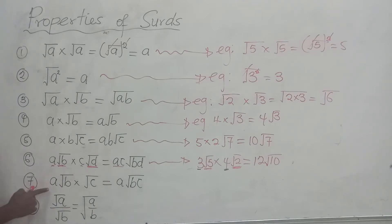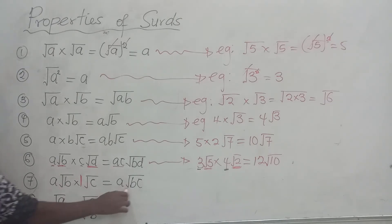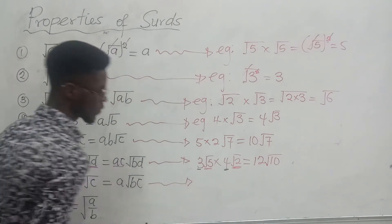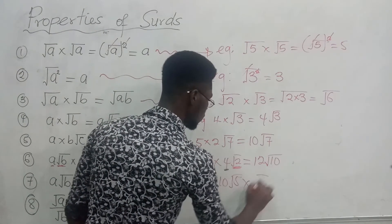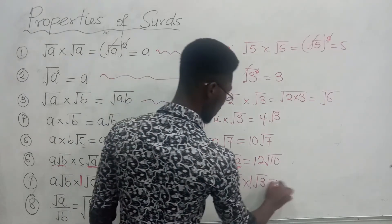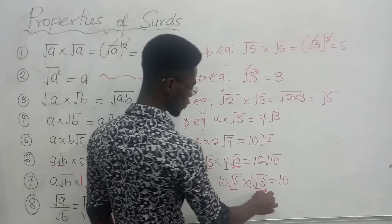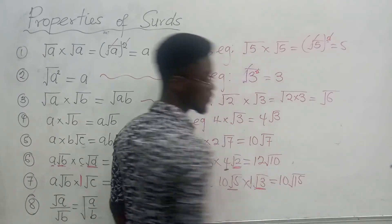The seventh property says: if you have a root b times root c, there is a hidden coefficient of one in front of root c. So a multiplies 1 to give a, and root b multiplies root c to give root bc. For example, if you have 10 root 5 times root 3: the 10 multiplies the hidden 1 to stay 10, and root 5 times root 3 gives root 15 — so the answer is 10 root 15.